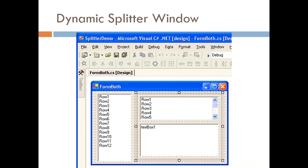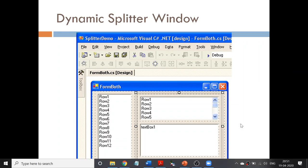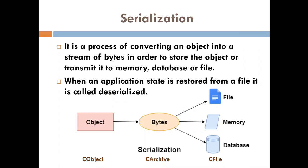This is a dynamic splitter window. So, what we have discussed so far: first, what do you mean by a splitter window, and second, what are the different types of splitter windows available. The next topic we are going to discuss today is known as serialization.